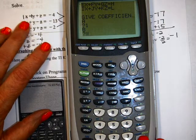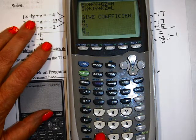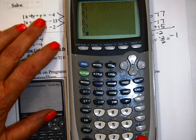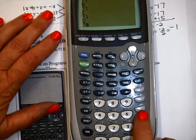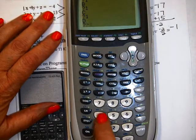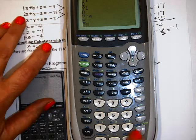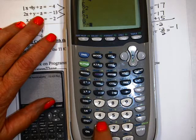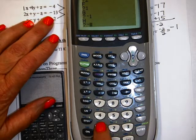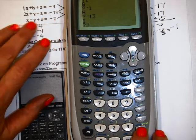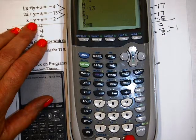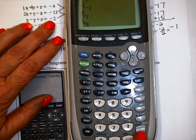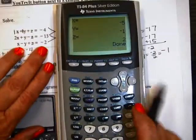Again, my A is 1, enter. My B is 1, enter. 1, enter. Now that's negative 4. Don't hit minus 4. Negative's down here. Negative 4, enter. 2, enter. 1, enter. Negative 1, enter. Negative 13, enter. 1, enter. Negative 1, enter. 1, enter. Negative 2, enter. And look at your answer.